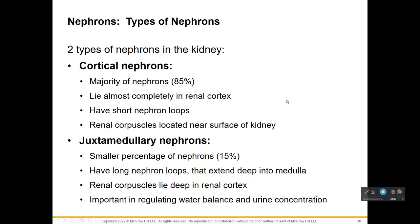There are two types of nephrons: cortical nephrons and juxtamedullary nephrons. The majority are cortical, found in the cortex with short nephron loops near the surface. Juxtamedullary nephrons — juxta meaning to cross into, plus medulla — are fewer but have really long nephron loops that go into the medulla, lying deeper. These are important in regulating water balance and urine concentration because their long loops can perform a lot of osmosis.